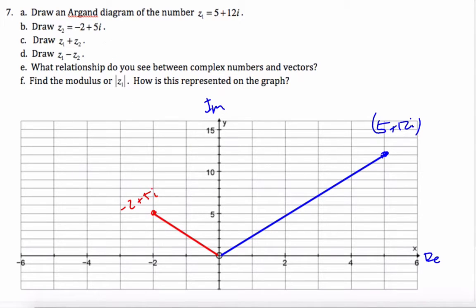And so now, if I want to add these two together, I can quickly do that and go 5 minus 2 is 3, and then 5 plus 12 is 17i. If I draw that, 3, 17 is right about there.